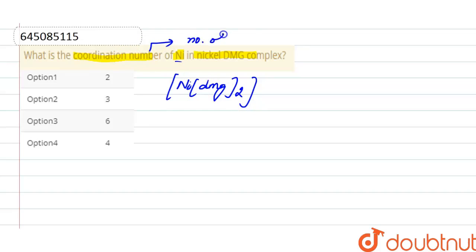It is the number of donor atoms directly attached to central metal atom. So here DMG is the ligand present.